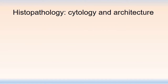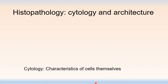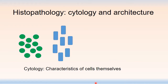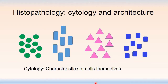When we look at tissues underneath the microscope we are looking at two major features: cytology and architecture. Cytology is the characteristics of the cells themselves — what shape are they, how big are they, what color are they? Whether our cells are green or triangular, of course these are symbolic representations, but it is the quality of what the cells themselves look like that helps us classify these tumors.